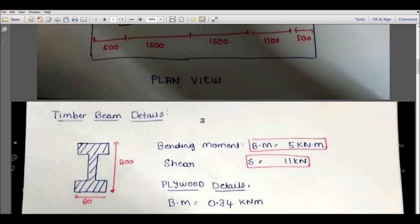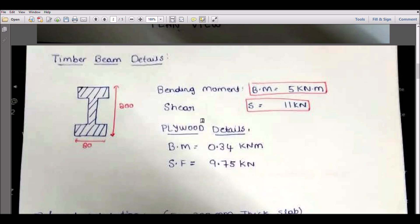First I will go for timber beam details. What I have considered is my timber beam. If you are considering different timber, we have to get the values. These values might differ for different timber beams. My timber beam bending moment will be 5 kN·m and shear force will be 11 kN. Please check before using any timber beams.